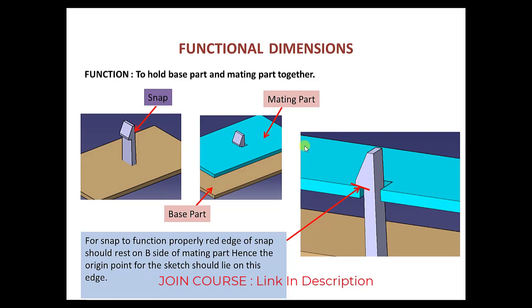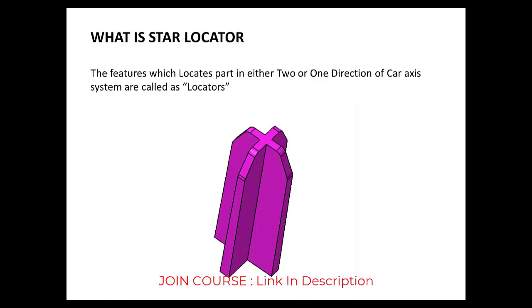Then star locators. When we have to assemble two parts, we need to locate the part before fixing with the help of different plastic features like snaps, screw boss, welding cylinder, and clip tower.